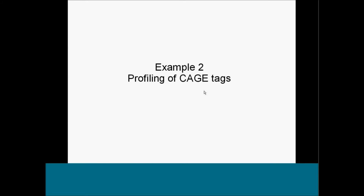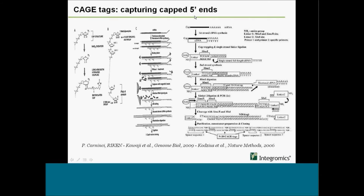What are CAGE tags? CAGE tag is a molecular process designed to capture the 5' prime extremities of mature, processed transcripts. Usually when you have a transcript, there's a specific modification at the 5' prime end to protect it. You get fragments corresponding to this 5' prime terminal region — these CAGE tag sequences are specific to the 5' prime end. CAGE tags are commonly used to detect new promoters.